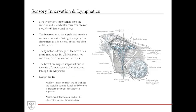The breasts are highly innervated structures, innervated from the second through sixth intercostal nerves as well as the supraclavicular nerves. In certain instances where surgery is required, the nerves are at high risk for iatrogenic injury, especially when doing circumferential incisions around the breast tissue or nipple, or during breast excisions such as lumpectomies, mastectomies, or treatment of fat necrosis associated with trauma — all of which can affect the sensory component of the breast.